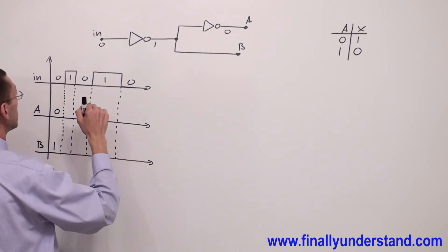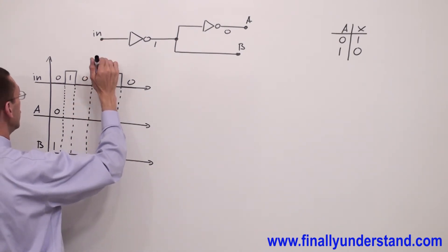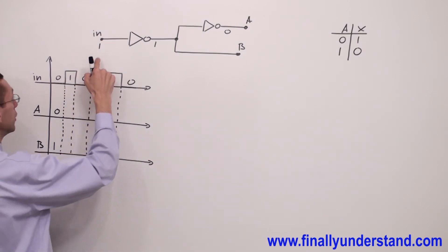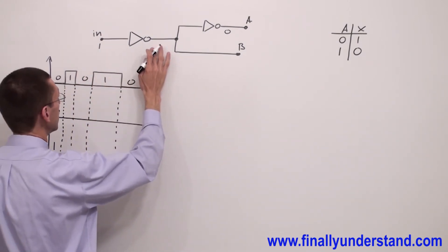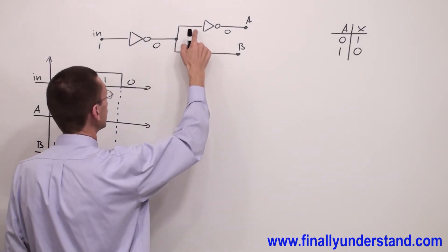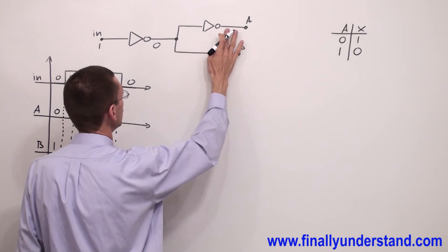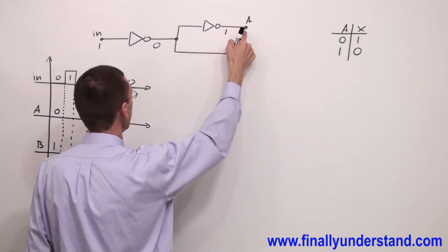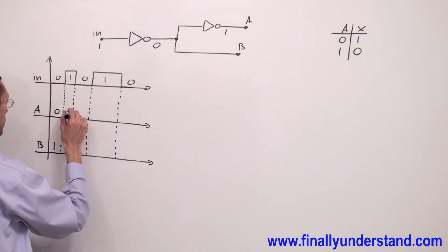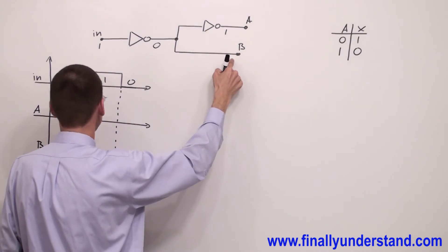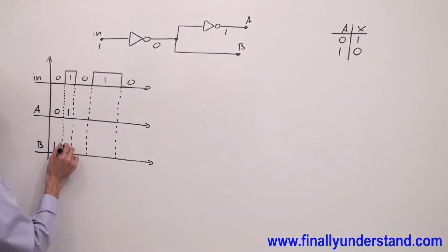Now let's see what will happen if I apply one to the input. This one is going to be inverted and I'm going to have zero here. This zero will go to the next inverter and I'm going to have one at point A. That's why I write one over here. Zero goes directly to point B, so point B is going to be zero.